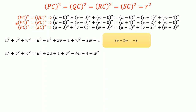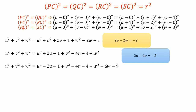Similarly, from PC² = RC², after cancelling u², v², w² from both sides, we get: 2u − 4w = −5. Then from the third equation PC² = SC², we get: −2u − 4v − 6w = −14.